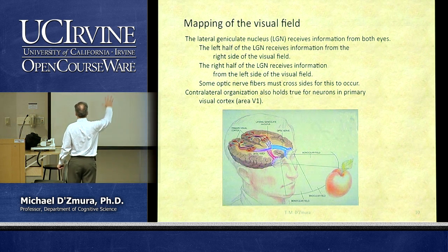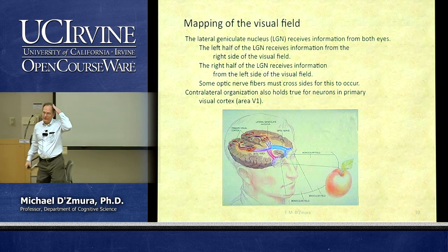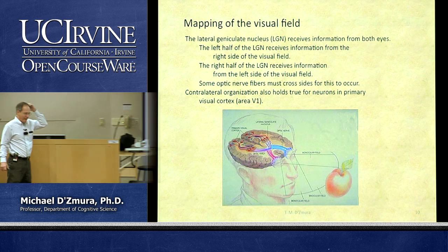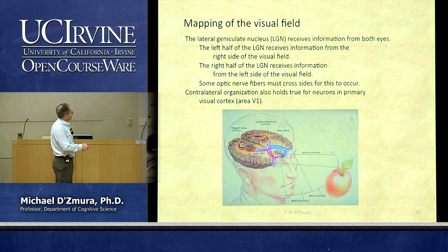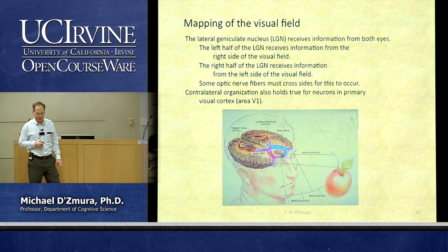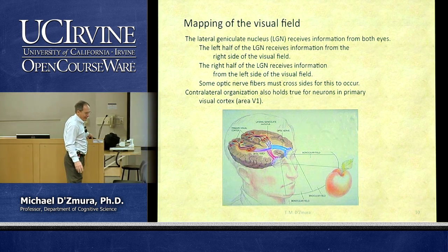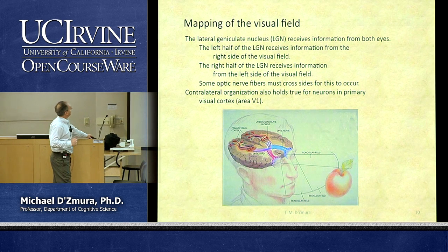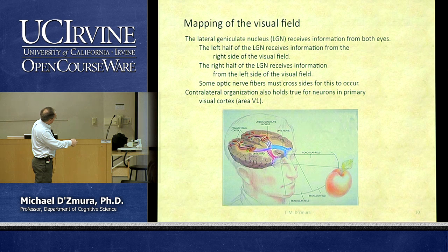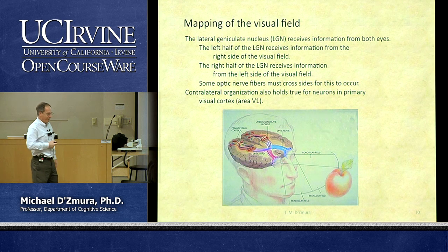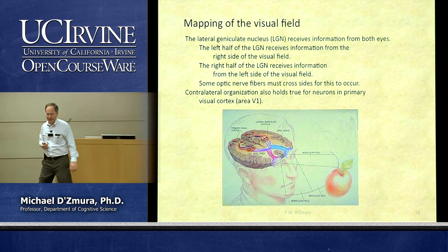If you move your hand on the right side of the visual field, it is neurons in the left lateral geniculate nucleus that respond best. For this contralateral representation to be true, certain axons have to cross to the other side of the brain. The axons of neurons in the LGN project primarily to primary visual cortex, area V1, at the back of the brain.